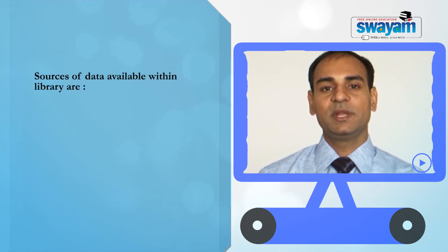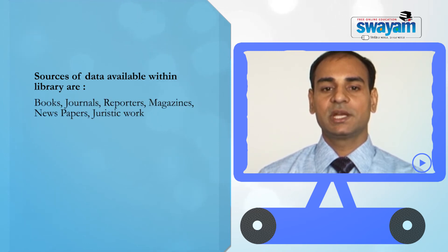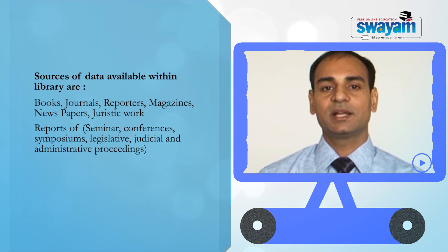The sources available in library methods are basically books, journals, reporters, magazines, newspapers, or juristic works. Reports of seminars, symposia, or proceedings of any legislative, judicial, or administrative activity can also be found in the library.